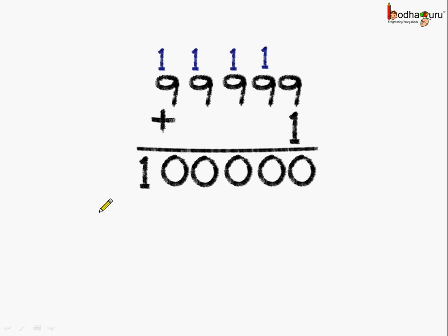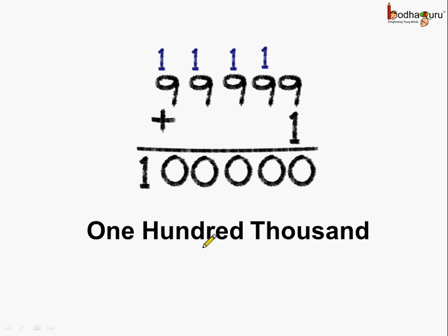Now which is this number? 1, 2, 3, 4, 5, 6 — it has 6 digits. It is the smallest 6-digit number. And what do we call it? 1 stands for 100,000 — that is 10,000 times 10 equals 100,000. So this is equal to 100,000.